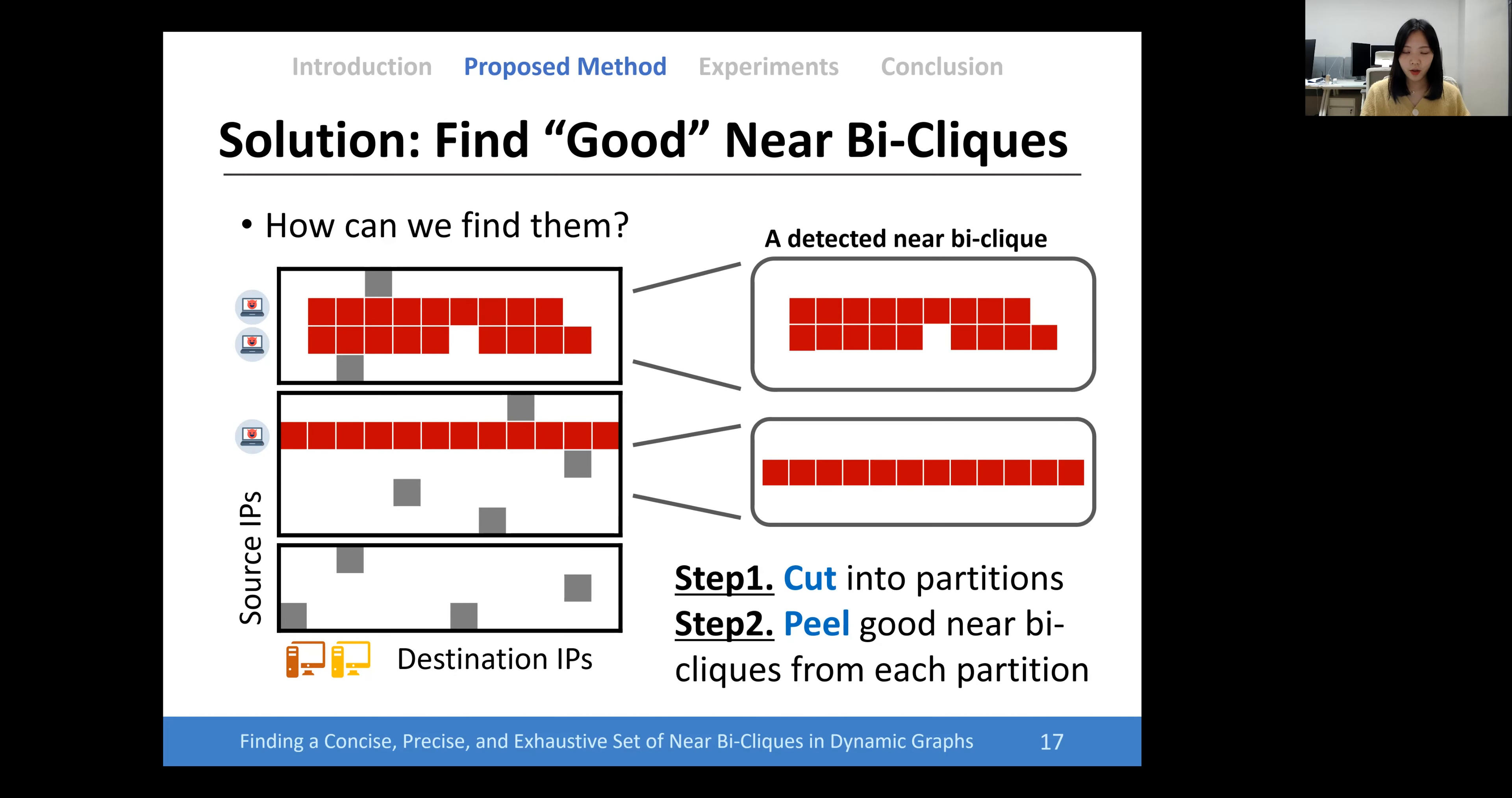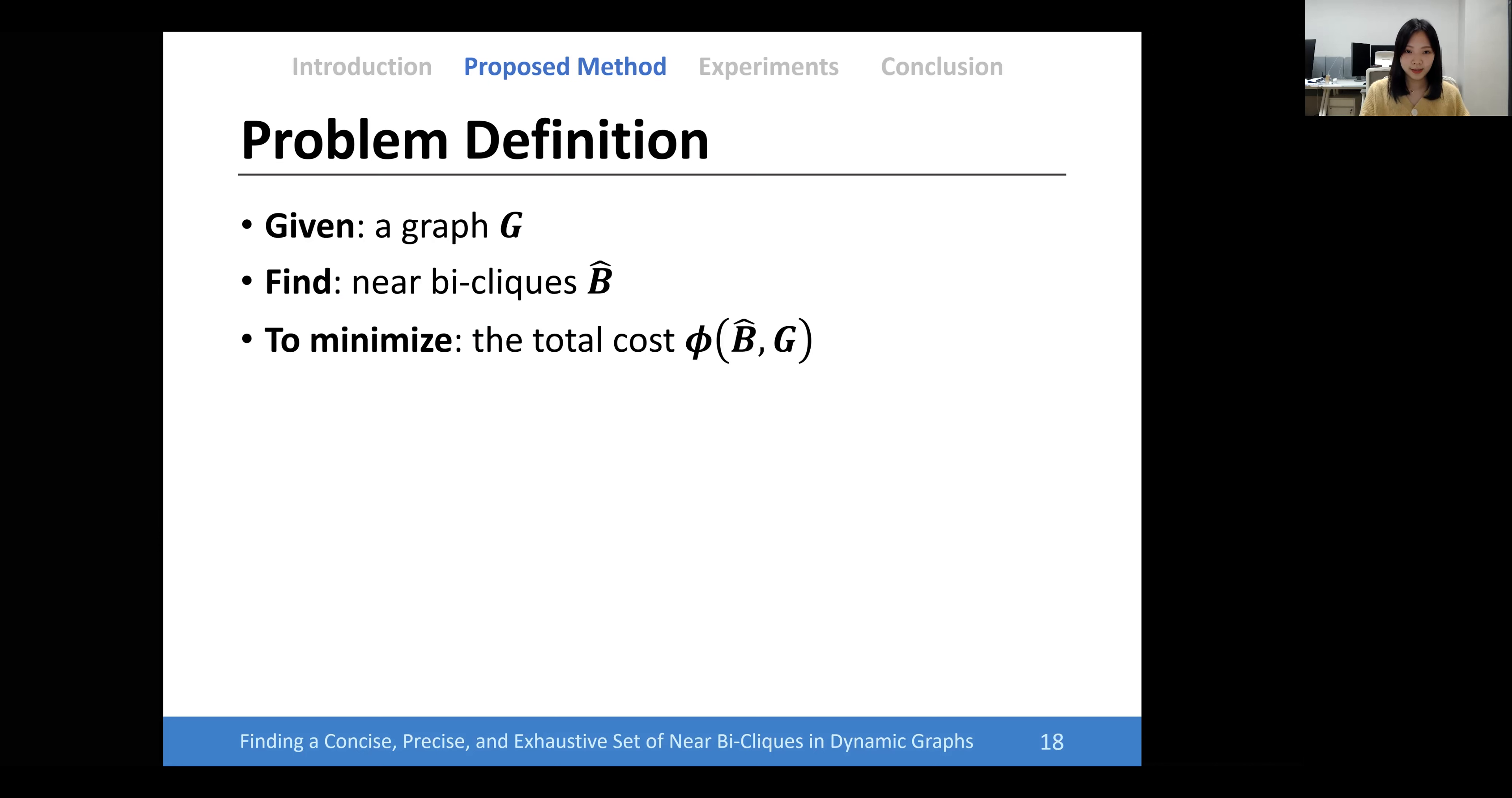In a nutshell, we cut the given graph into partitions and peel good near bi-cliques from each partition. Thus, in this work, we formalize our problem as: given a graph G, we find a set of near bi-cliques to minimize the total cost.